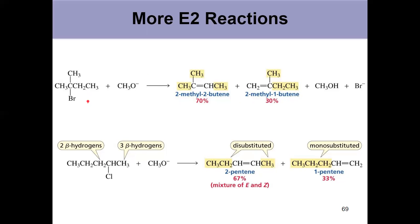Looking at the example: we have beta carbon, beta carbon, beta carbon — but this one has the fewest hydrogens, two versus three and three, so it loses a hydrogen for your major product. Same thing on the bottom. Your major product is the more stable alkene, which is usually the one that's more substituted.